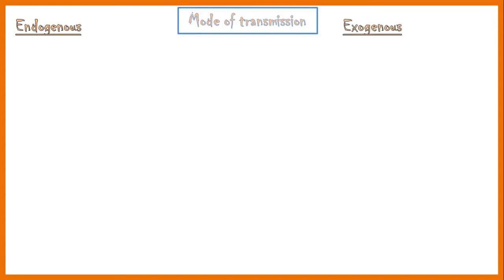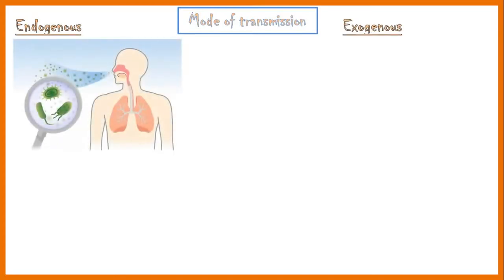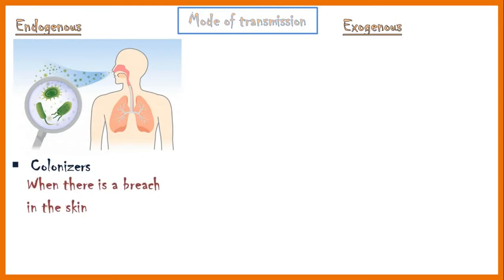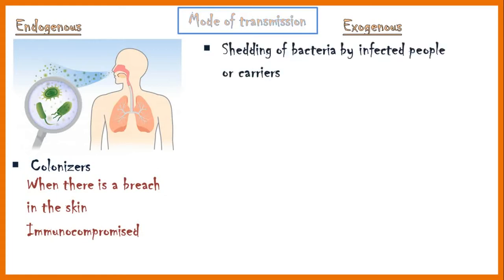Mode of transmission could be either endogenous or exogenous. Endogenous transmission occurs when the colonizers cause disease in their own host, when there is a breach in the skin or when the host immunity drops. In exogenous transmission, infected people or asymptomatic carriers shed the bacteria, and they enter another person's body and cause disease.